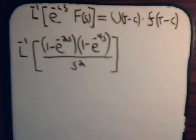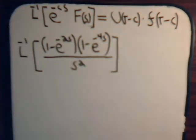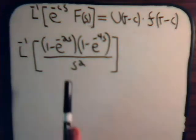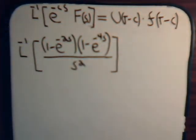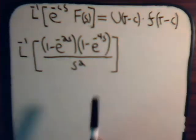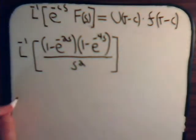In the previous video the problem we had we could pretty much just read off the solution by using our formula. This is derived in the video before that, but here the expression is in a strange form, so it would probably be useful to multiply the numerator first.